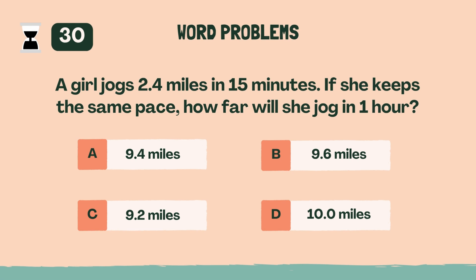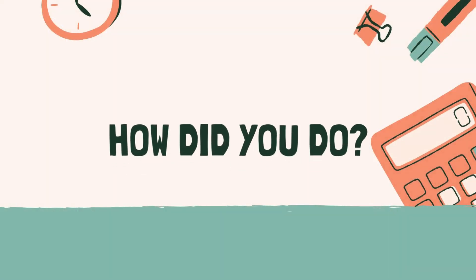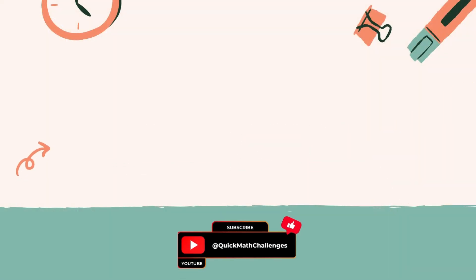A girl jogs 2.4 miles in 15 minutes. If she keeps the same pace, how far will she jog in one hour? The answer is B, 9.6 miles. That's it — how did you do? Let us know your score in the comments below. If you enjoyed it, don't forget to hit like and subscribe. And if you're up for more challenges, click on one of the videos on the screen. See you there.